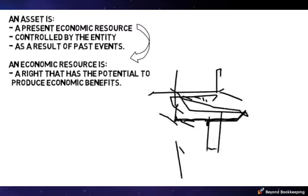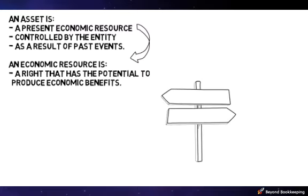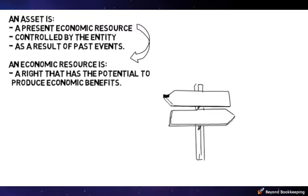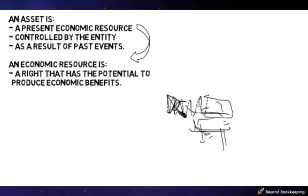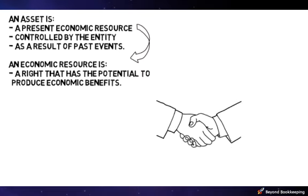The entity has control of the vehicle and can instruct the driver when and where to deliver. The right to future economic benefits and control of the vehicle was achieved by purchasing the vehicle as the past event.